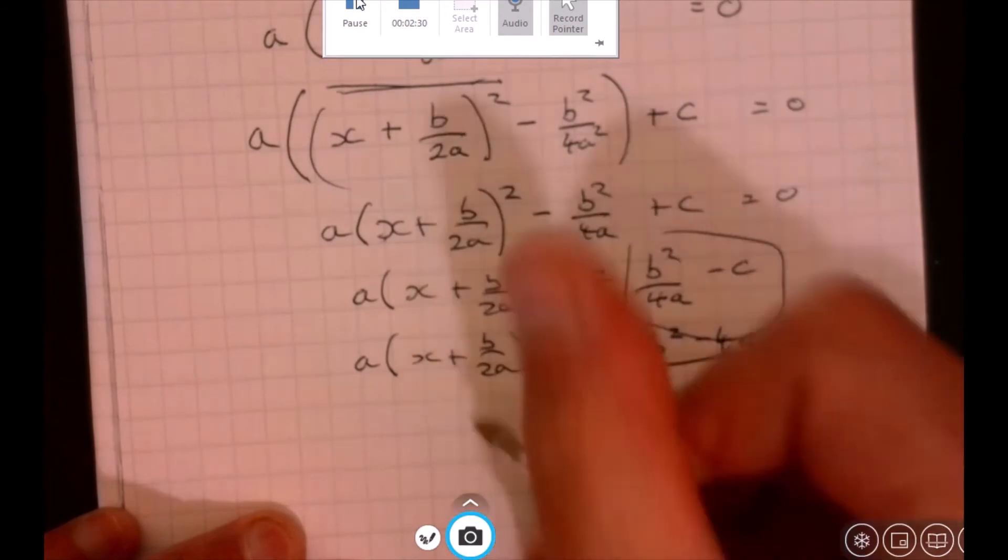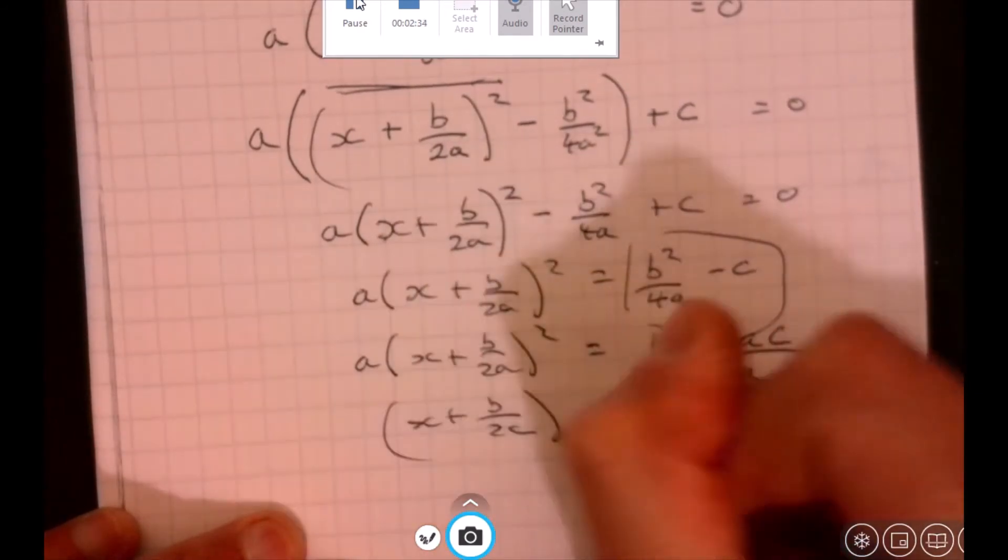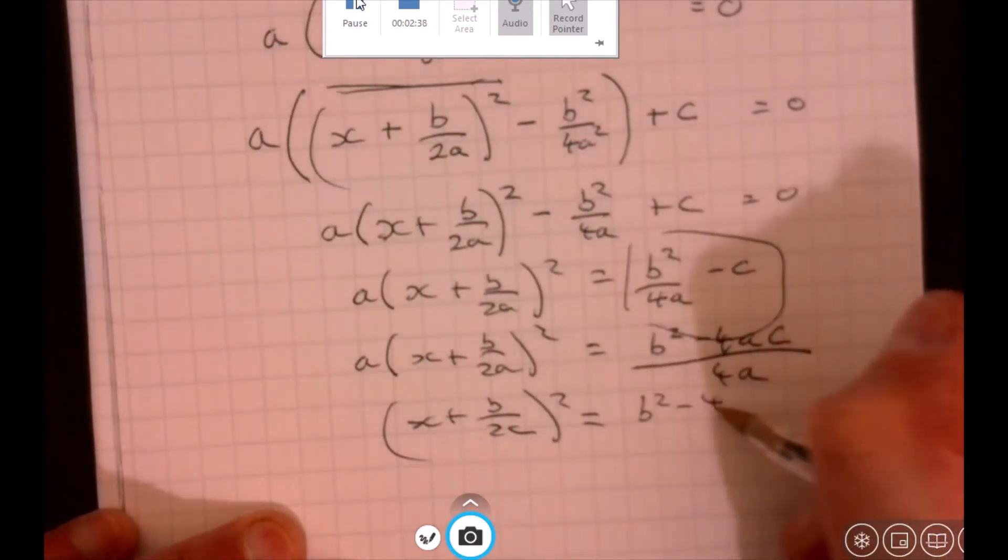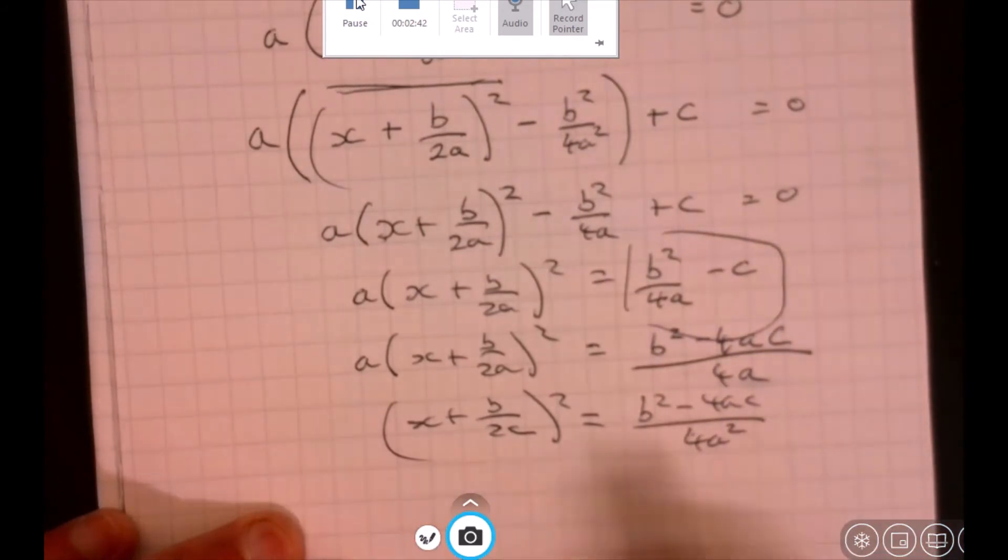It's always easier when you're doing this - just do one thing at a time. That gives us b squared minus 4ac over 4a squared. Yeah, that a just went over there.